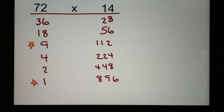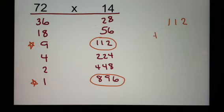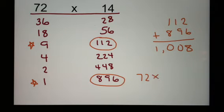So I'm going to go across from my starred numbers. The number across from 9 is 112. The number across from 1 is 896. So 112 plus 896 becomes my problem. And I end up with 1008. So, 72 times 14 equals 1008.